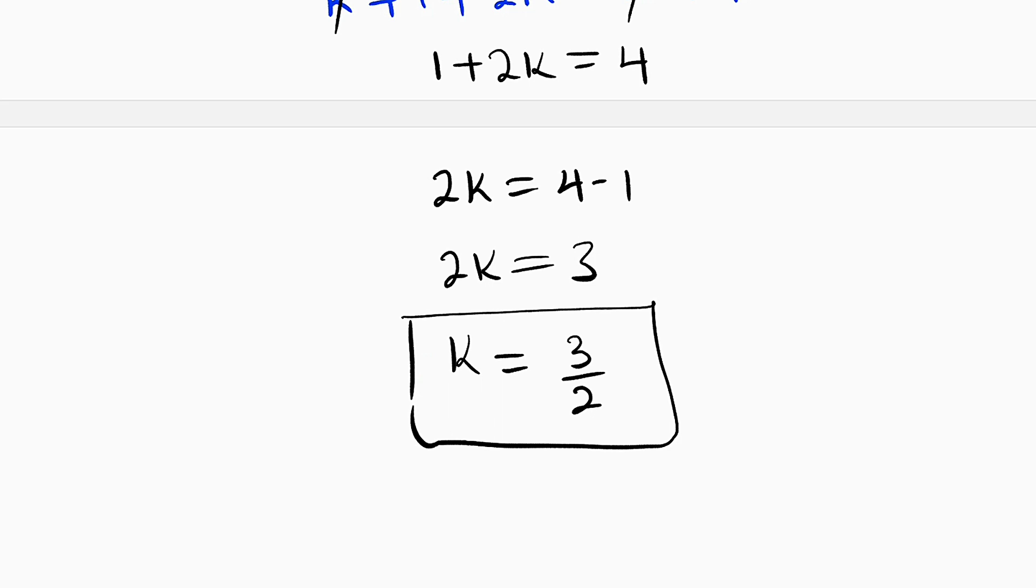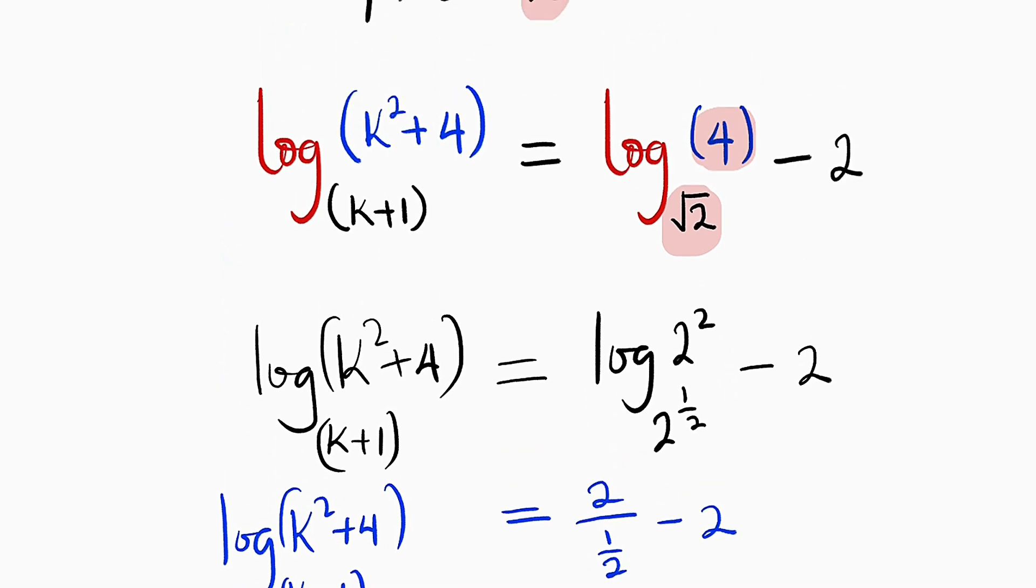And the assignment for you here is that I want you to check this value in the main equation, which is log of k squared plus 4 the base of k plus 1 equal to log of 4 with the base of root 2 minus 2, to see whether the left hand side will be exactly equal to the right hand side.